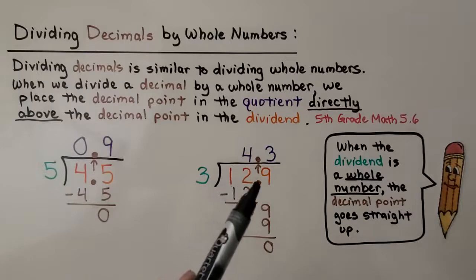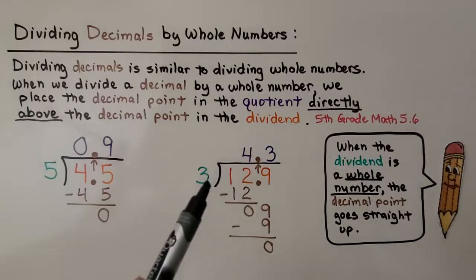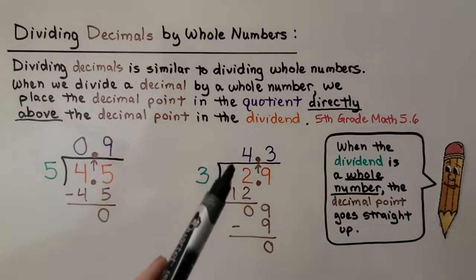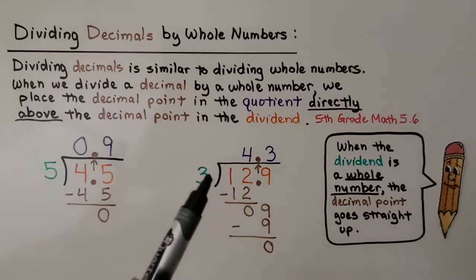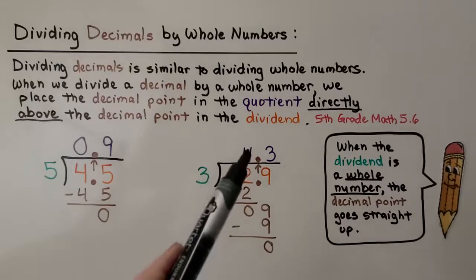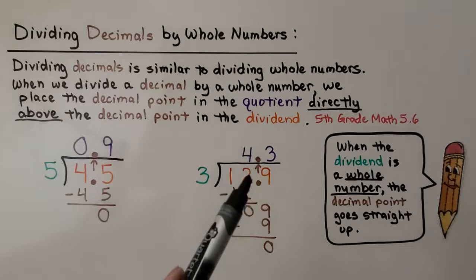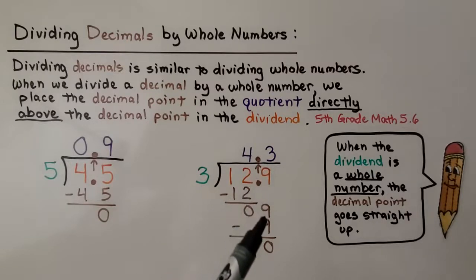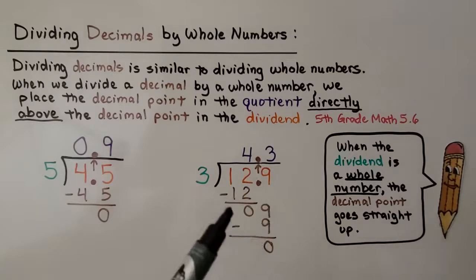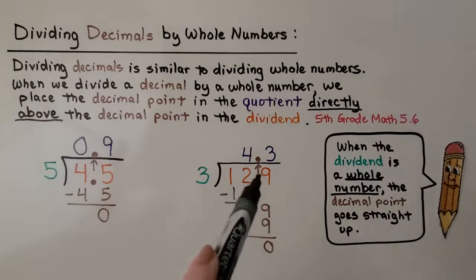Here we have 12 and 9 tenths divided by 3. 3 can't fit into the 1, so we don't put the answer here. 3 can fit into 12 four times, so we write a 4 above the 2. 3 times 4 is 12. We subtract it, get a 0. It's the 9's turn to come down. 3 fits into 9 three times. 3 times 3 is 9. We get a 0 remainder. That decimal point just goes straight up. The quotient is 4 and 3 tenths.